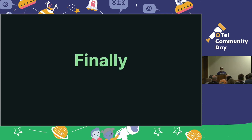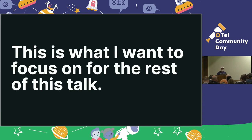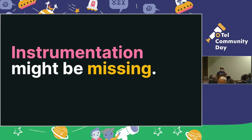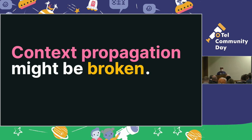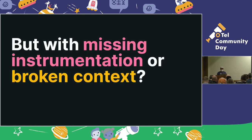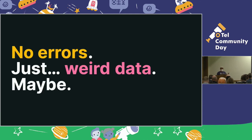Last and definitely not least: is the data correct? Is the data coming out of your application actually correct? This is the part I want to focus on for the rest of the talk, because debugging these data issues is terrible. Instrumentation might be missing. Context propagation might be broken. And when you have a connection failure, you have an error — there's a breadcrumb for people to follow and a straightforward solution. But when instrumentation is missing or context is broken, you get nothing. No errors, maybe some weird data, maybe not.